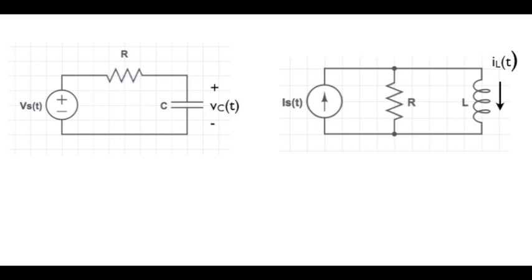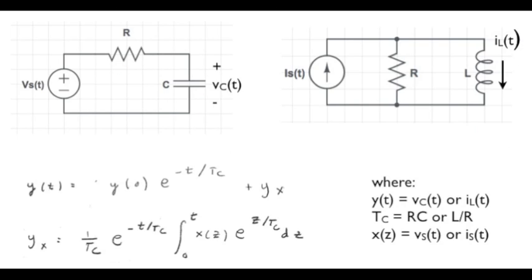Recall that the capacitor voltage and the inductor current are state variables in that they determine the state of energy stored in the capacitor and the inductor, and as such cannot change instantly with time. In our previous lesson titled 'A General Approach to Solving First Order RL and RC Circuits,' the general form of the solution for the state variable — either the capacitor voltage or the inductor current — was equal to the sum of two terms. The first term depended on the initial value of the state variable and a time constant.